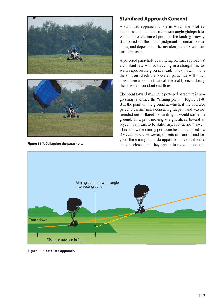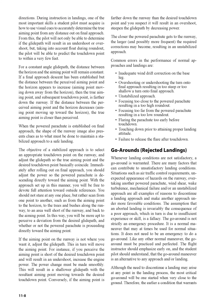To a pilot moving straight ahead toward an object, it appears to be stationary — it does not move. This is how the aiming point can be distinguished: it does not move. However, objects in front of and beyond the aiming point do appear to move as the distance is closed, and they appear to move in opposite directions. During instruction and landings, one of the most important skills a student pilot must acquire is how to use visual cues to accurately determine the true aiming point from any distance out on final approach. From this, the pilot will be able to determine if the glide path will result in an undershoot or overshoot, and taking into account float during roundout, predict the touchdown point to within a very few feet.